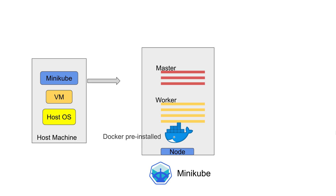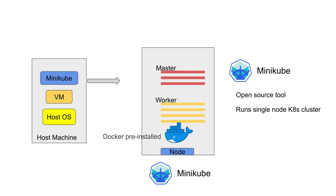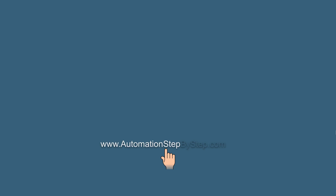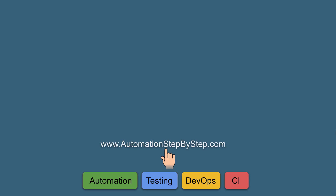So to summarize: Minikube is an open source tool. It runs a single node Kubernetes cluster inside a virtual machine on your operating system, and it can be used for testing, experimenting, and learning purposes. Of course, you cannot use Minikube for production because we have limited resources here. In the coming sessions, we will start installing Minikube. I hope this session was very useful for you. Thank you for watching.